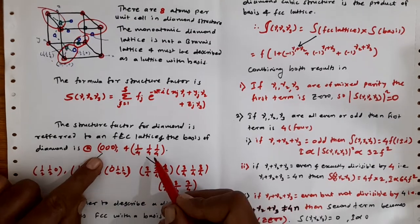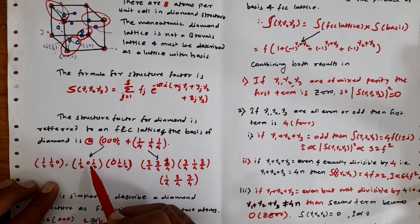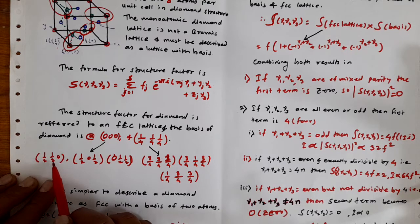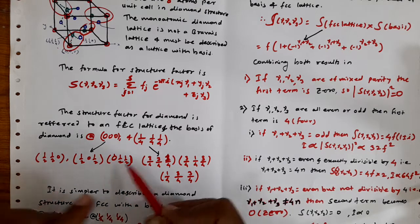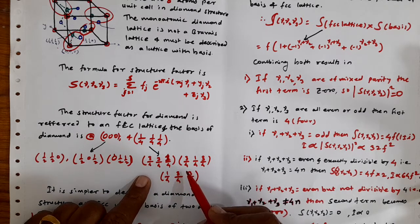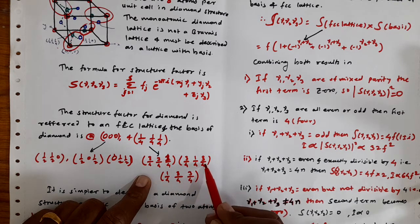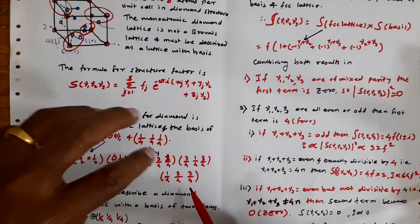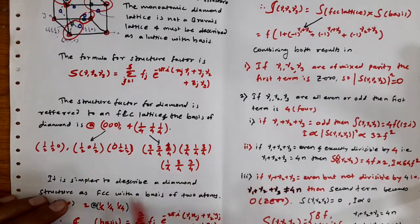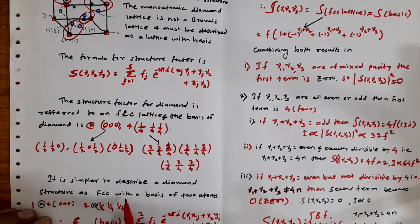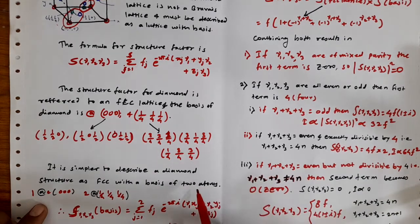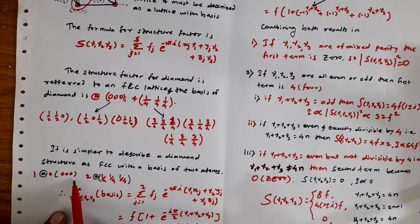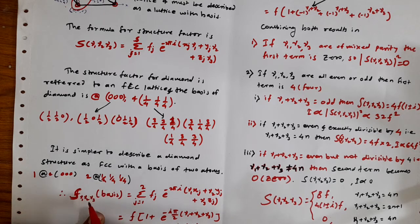The basis consists of two positions: (0, 0, 0) and (1/4, 1/4, 1/4). The (0,0,0) position generates the FCC atoms situated at (1/2,1/2,0), (1/2,0,1/2), and (0,1/2,1/2). The (1/4,1/4,1/4) position generates another set of atoms at positions (3/4,3/4,1/4), (3/4,1/4,3/4), and (1/4,3/4,3/4). Thus the diamond structure is described as FCC with a two-atom basis.